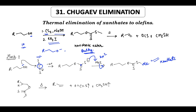The xanthate then undergoes elimination in the presence of heat. Heating temperatures depend on different xanthates but are generally 150°C or above. We write the molecule in a particular conformation so that we can see the elimination clearly — from this carbon the oxygen is leaving, and from the adjacent carbon a proton is leaving. This allows us to understand the stereochemistry: this is a syn elimination, meaning both groups leave from the same side.